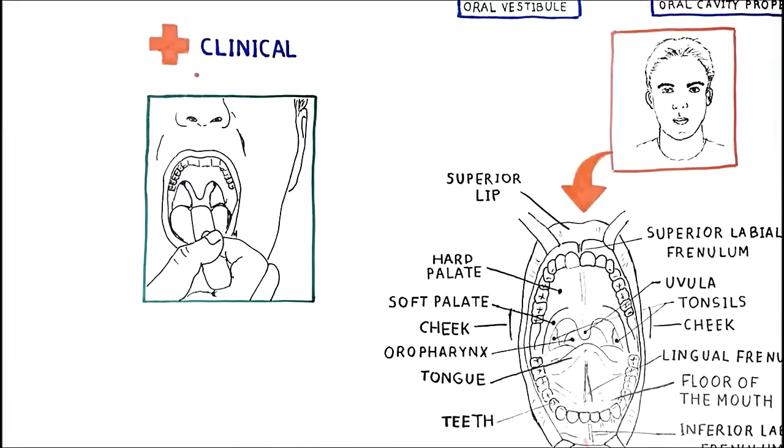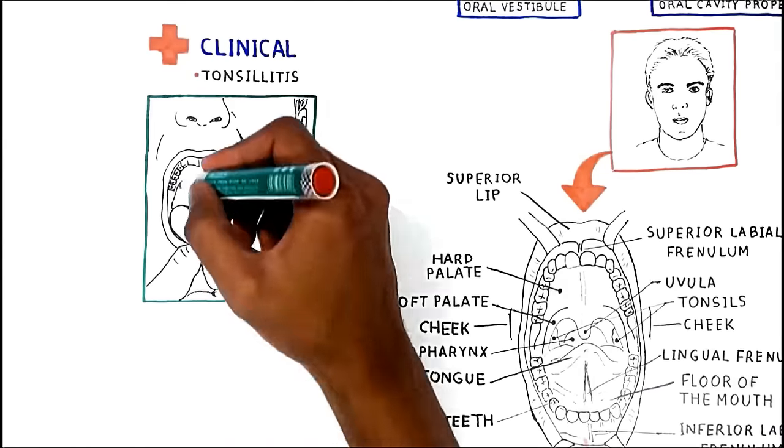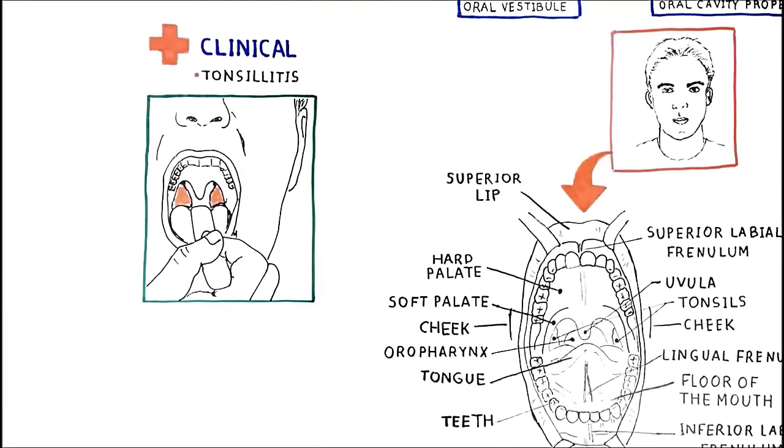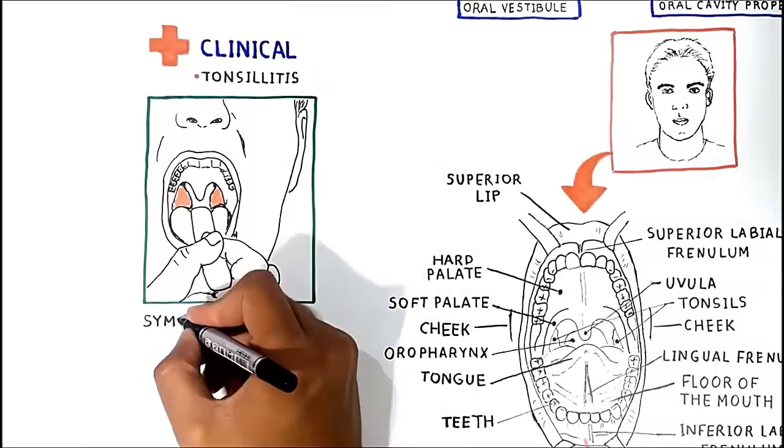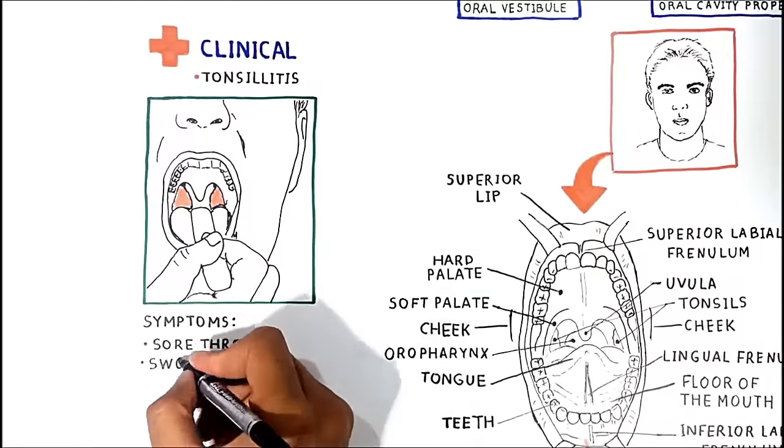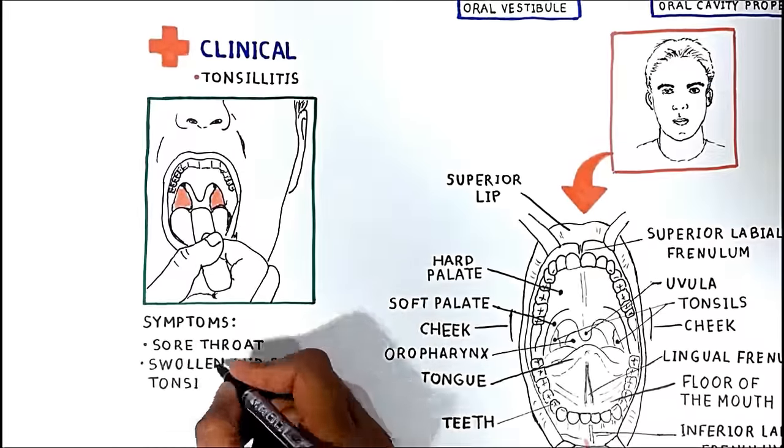Sometimes they inflame causing tonsillitis. Inflamed tonsils appear red and swollen, and also not rare, they may have white or yellow spots. Symptoms include a sore throat and swollen and red tonsils.